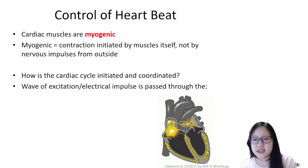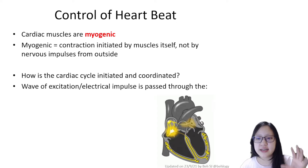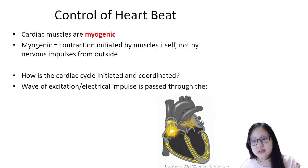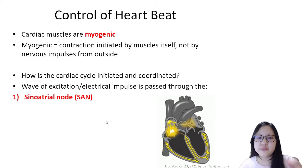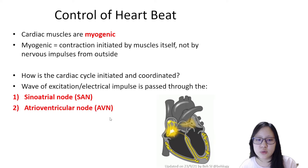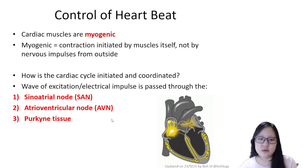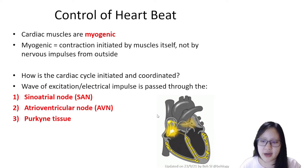How is the cardiac cycle initiated and coordinated? There are electrical impulses that pass through nervous pathways, from the sinoatrial node to the atrioventricular node to the Purkinje tissue.